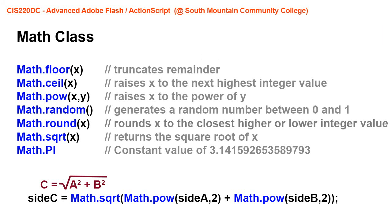In the next example, we're going to find the hypotenuse of a right triangle given side a and side b. You might remember from your high school geometry class that to find side c, it is the square root of a squared plus b squared — the Pythagorean theorem.